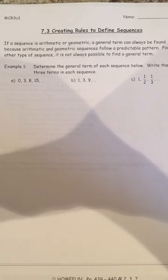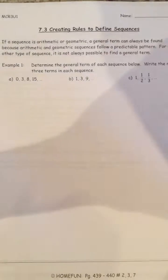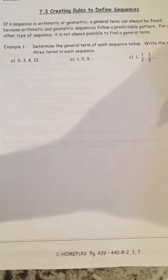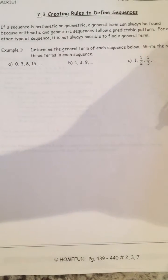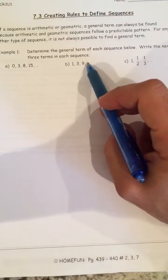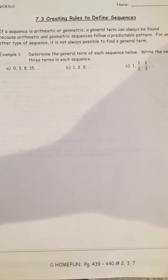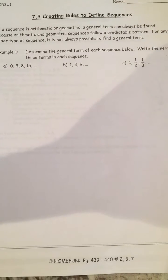In section 7.3, creating rules to define sequences: if a sequence is arithmetic or geometric, a general term can always be found because they follow a predictable pattern. For any other type of sequence, it is not always possible to find a general term. We have three examples here; we'll start with B and then C, as these sequences may follow arithmetic, geometric, or some other pattern.